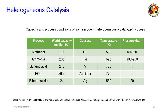For comparison, heterogeneous bulk chemicals: methanol, ammonia, sulfuric acid, FCC, and ethylene oxide, with catalyst systems using copper, iron, vanadium, zeolite, and silver (Ag). The capacity is pretty high - 70, 205, 46, 50, 24 million tons. Temperature can go much higher - up to 600-700K. Pressures are lower for some (sulfuric acid, FCC, ethylene oxide) though ammonia and methanol require higher pressures. Overall, temperature and pressure conditions vary significantly between homogeneous and heterogeneous catalysis.